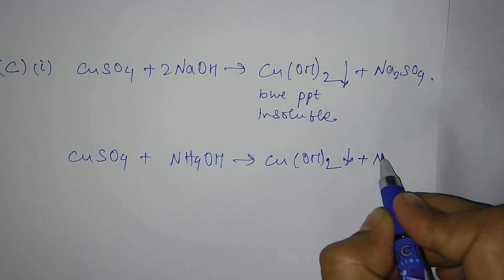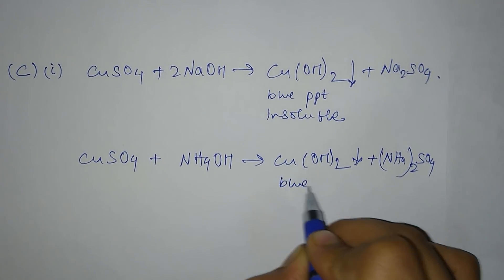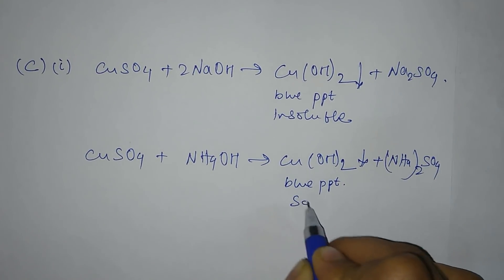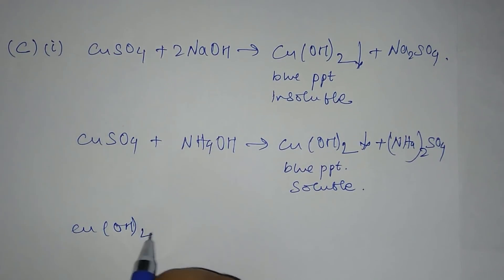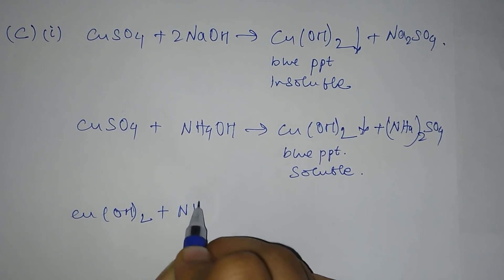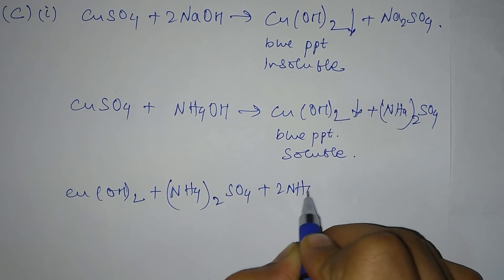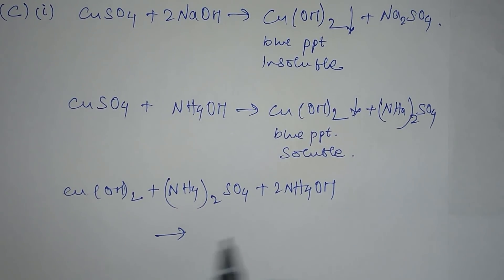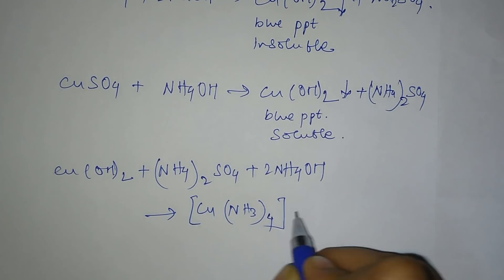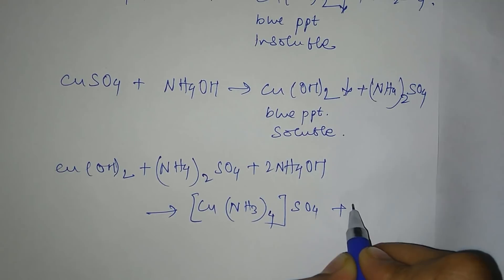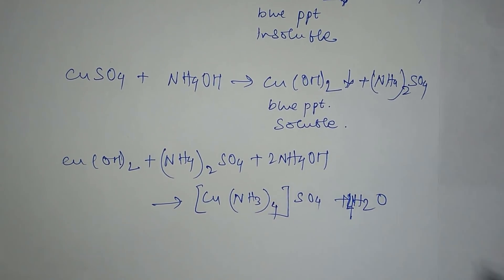The same blue precipitate is soluble. Ammonium sulfate plus ammonium hydroxide will give tetraamine copper(II) sulfate and water.